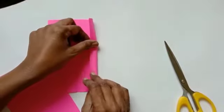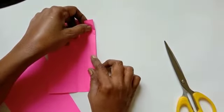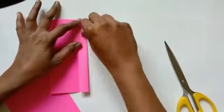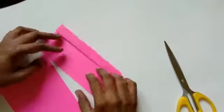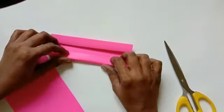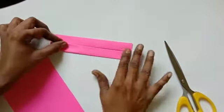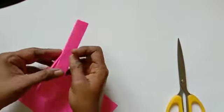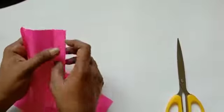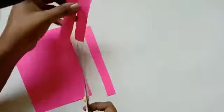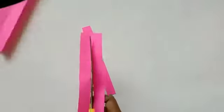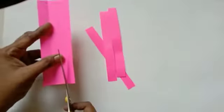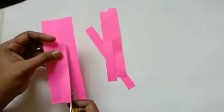Again fold into three lines. Cut the strips. Be careful while using the scissors children. If needed, take the help of your parents children.